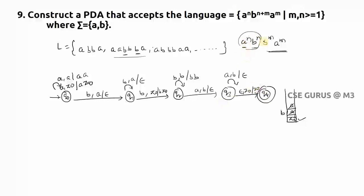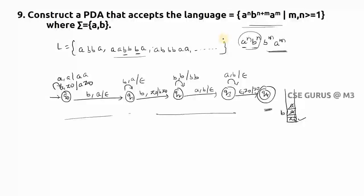Notice the symmetry: for a^n b^n we had (a, z-naught → az-naught), and here for b^m a^m we have (b, z-naught → bz-naught) — same pattern but with b instead of a. Where we had (b, a → ε) for popping, now we have (a, b → ε). Finally, on ε with z-naught, we go to q4, the final state. This is the complete pushdown automata construction. We'll see the next concept in the next video lecture — thank you.